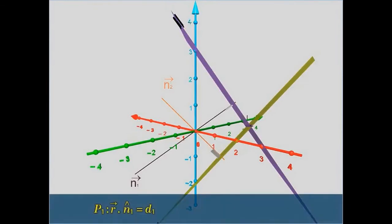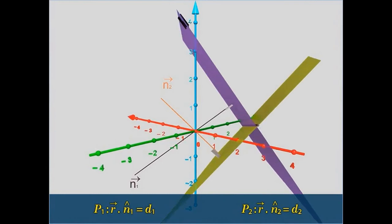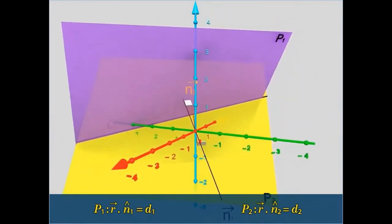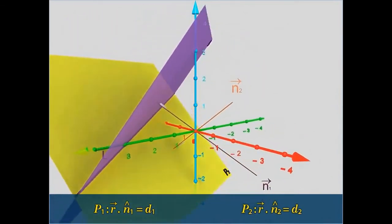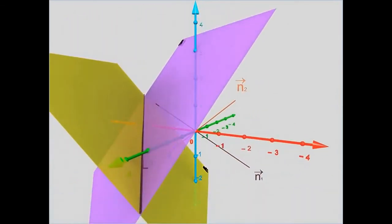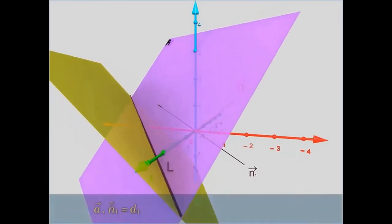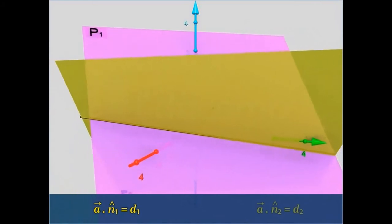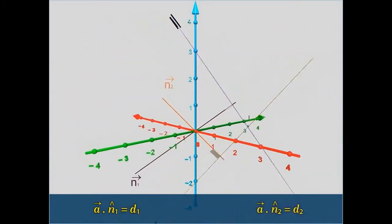Let P1 and P2 be two planes with equations vector R dot cap n1 equals D1 and vector R dot cap n2 equals D2. Let L be the line of intersection of the two planes P1 and P2. Let A be a point with position vector A on line L. Then vector A dot cap n1 equals D1 and vector A dot cap n2 equals D2.